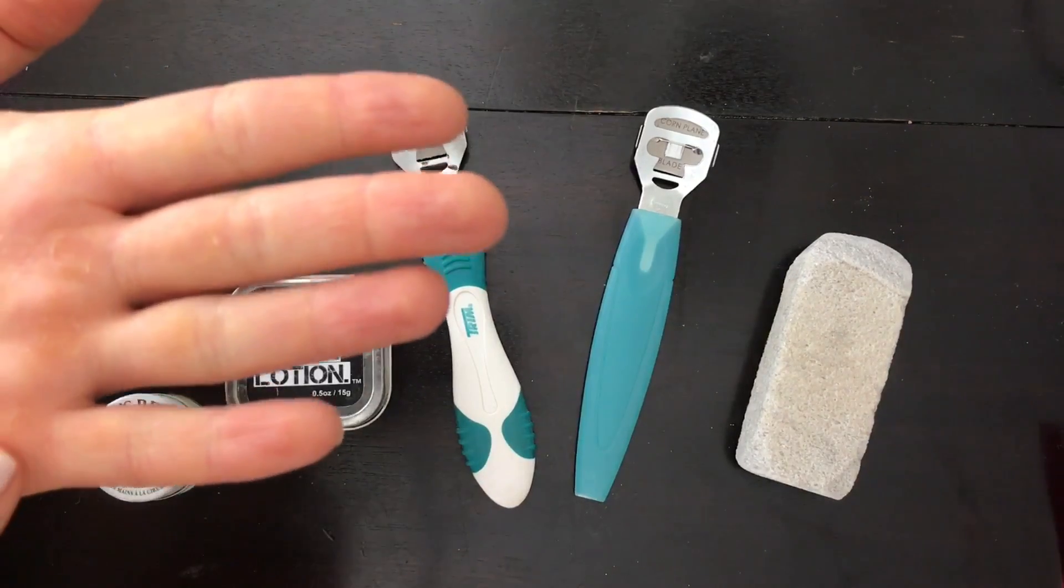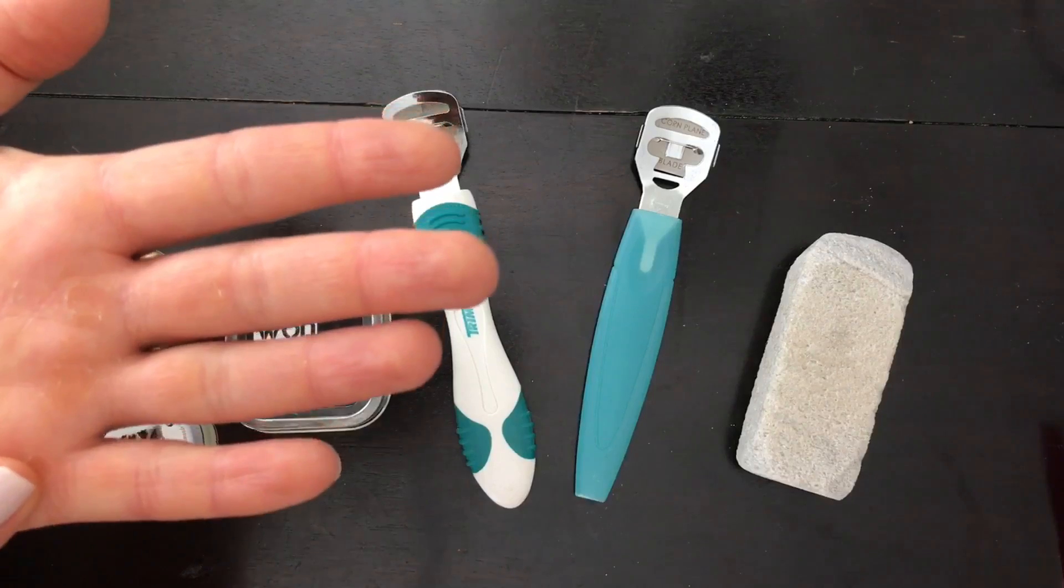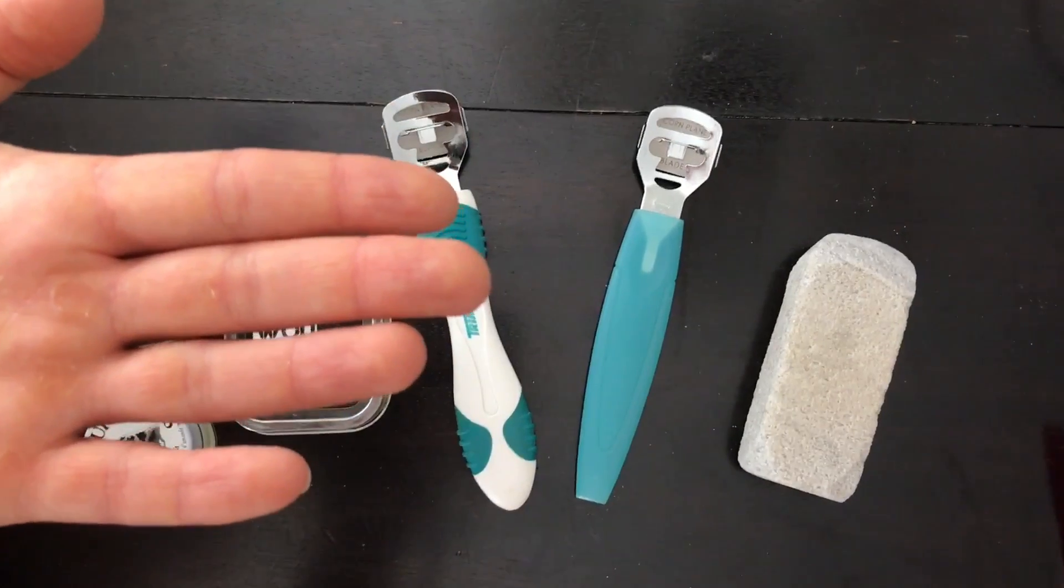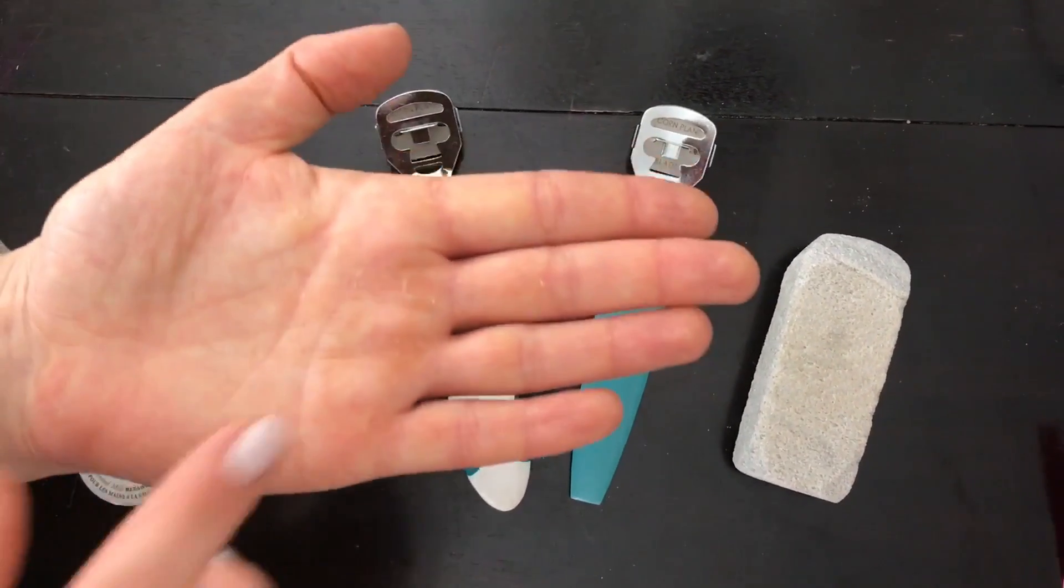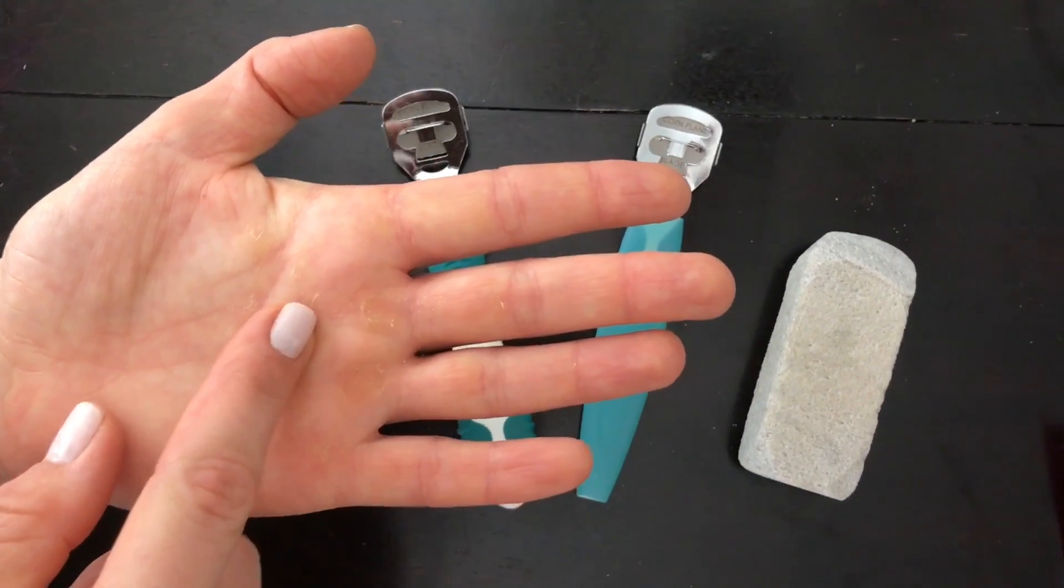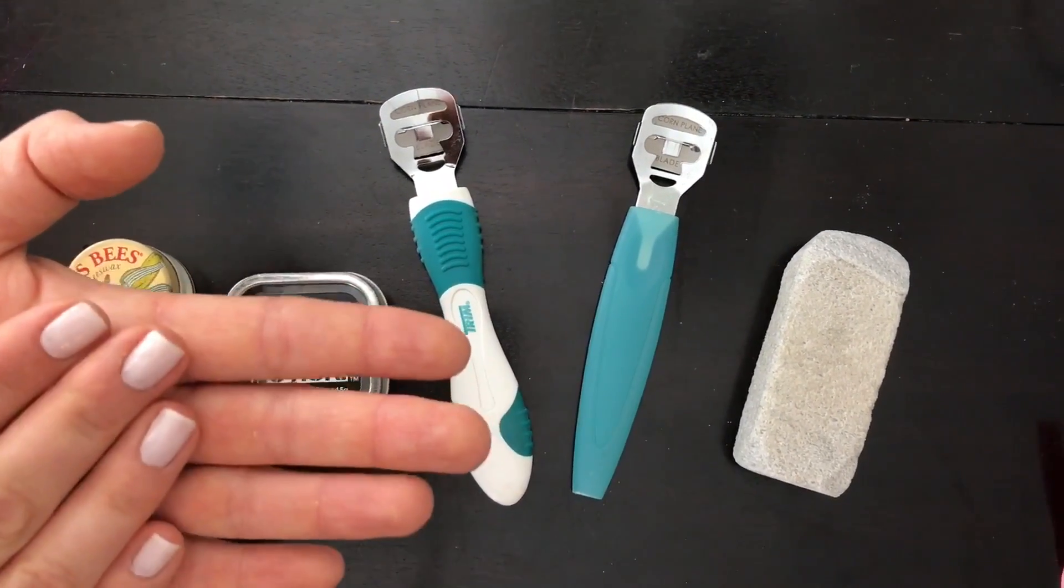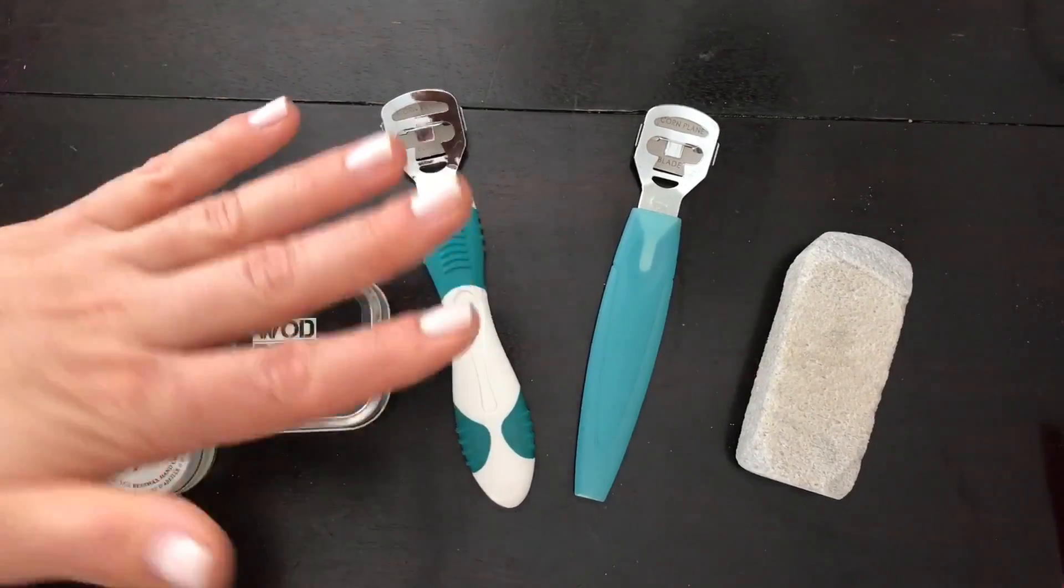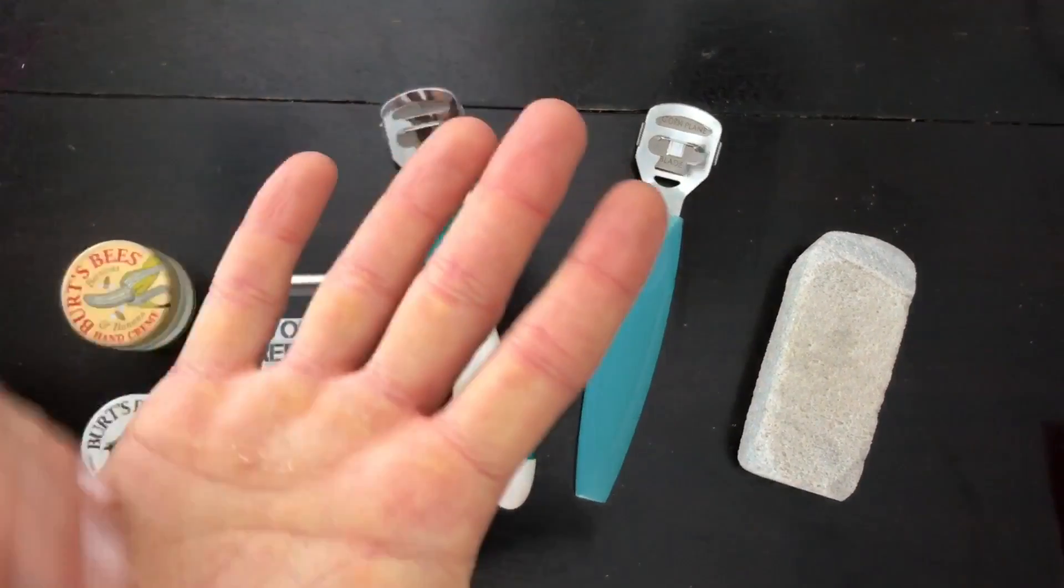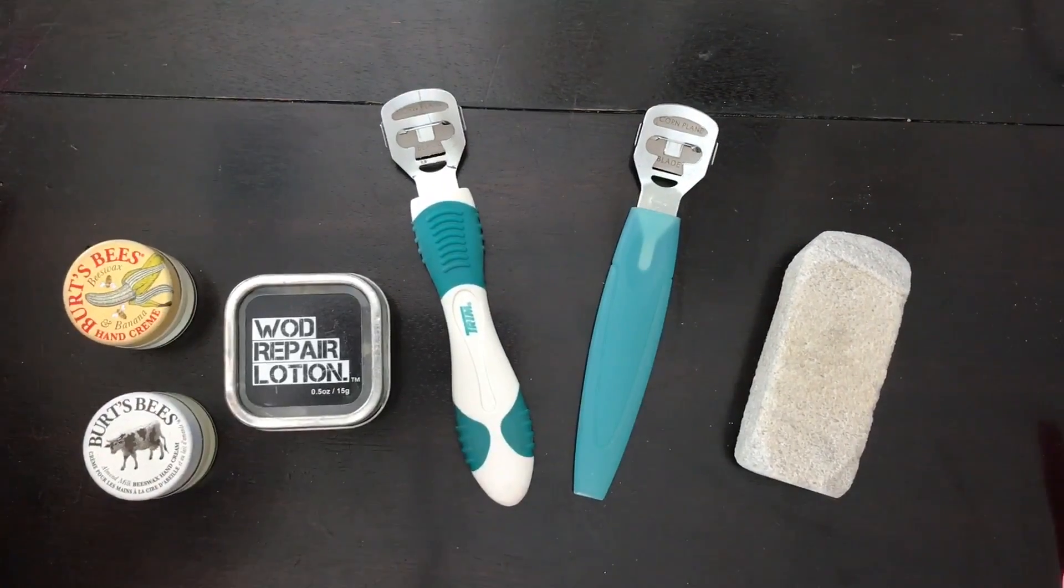Typically, once your calluses get really big, you're more at risk for having them tear. If you ever see people with huge tears on their hands, it's because they haven't taken care of their calluses. I'm going to show you today what I do to take care of mine to make sure that they stay nice and clean and I don't get rips and tears on my hands.